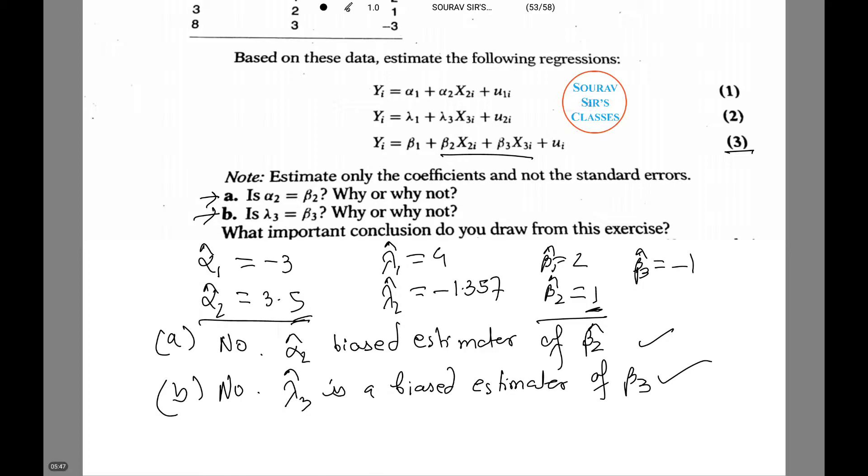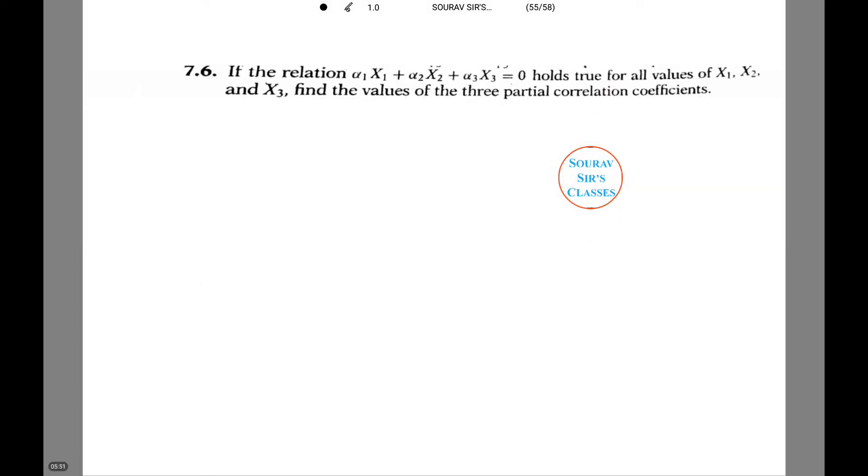Let's see another question. If the relation alpha 1 x1 plus alpha 2 x2 plus alpha 3 x3 equals 0 holds true for all values of x1, x2 and x3, we need to find the values of the three partial correlation coefficients.